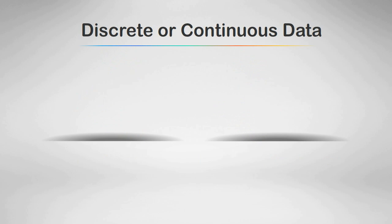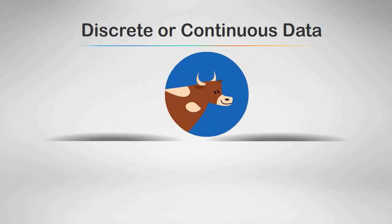Next let's look at discrete or continuous. The number of cows on a farm. Yes, that would be discrete. The age of the cows on the farm. That would be continuous.